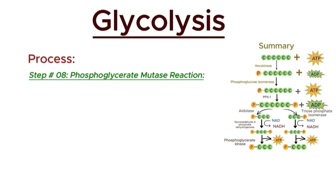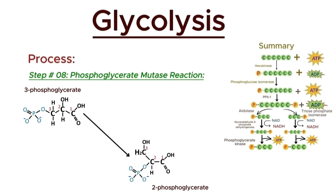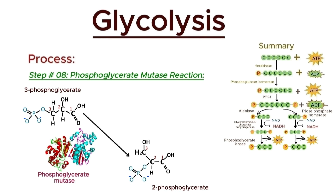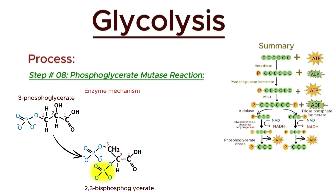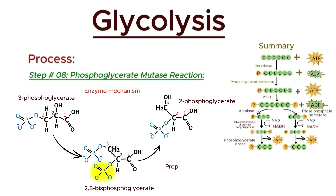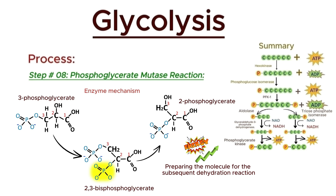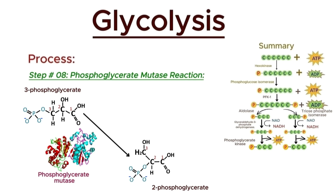In the eighth step of glycolysis, 3-phosphoglycerate is converted into 2-phosphoglycerate. This reaction is catalyzed by the enzyme phosphoglycerate mutase, which catalyzes the transfer of a phosphate group from the third carbon to the second carbon of the molecule. This enzyme operates via a mechanism that temporarily adds a second phosphate to the molecule, creating an intermediate called 2,3-bisphosphoglycerate. The enzyme then removes the original phosphate from the third carbon, resulting in 2-phosphoglycerate. This step prepares the molecule for the subsequent dehydration reaction, generating a high-energy compound necessary for ATP production in the next step.